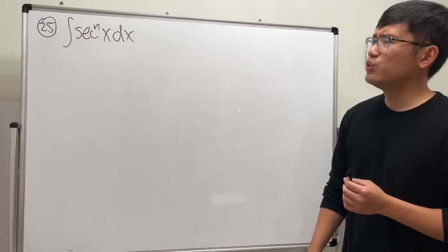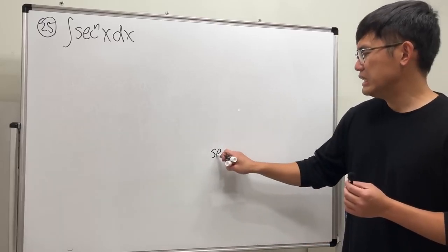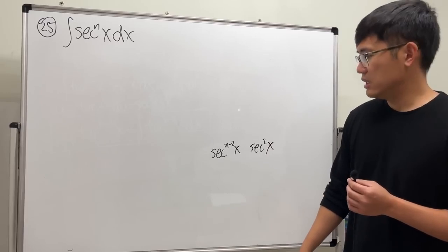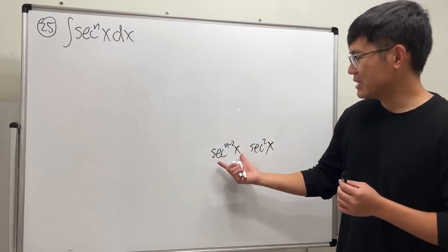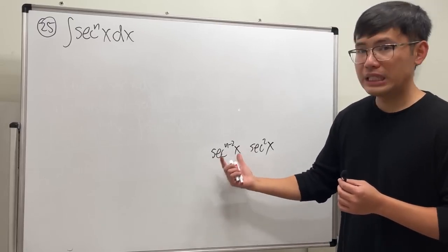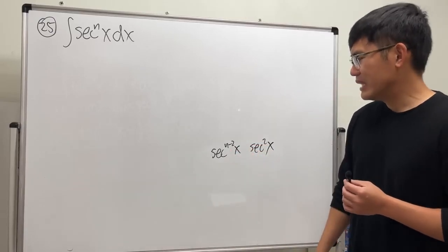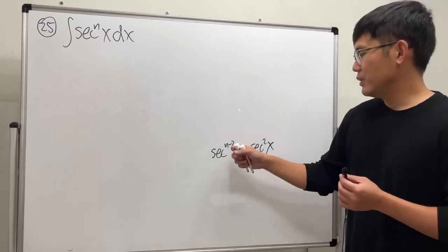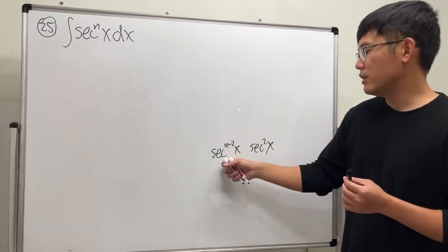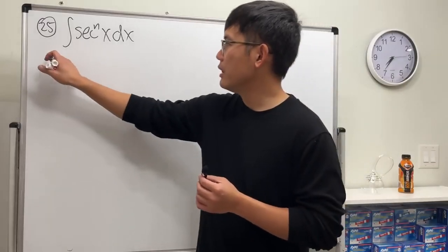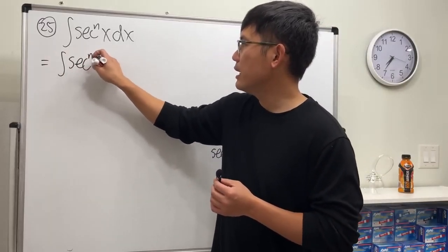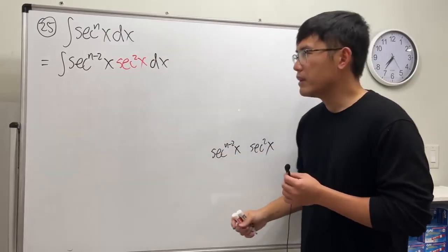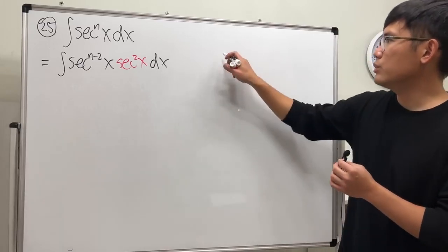We take out two of them: secant n minus 2 of x, and then secant square x. We cannot rewrite this in terms of tangent because it's n minus 2 and we don't know what n is. But with this setup, integration by parts is much better — we can integrate this part easily and differentiate the other part. For this kind of question, you think about it a little and then apply integration by parts.